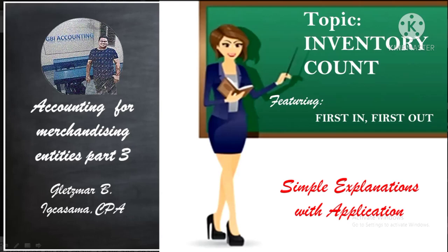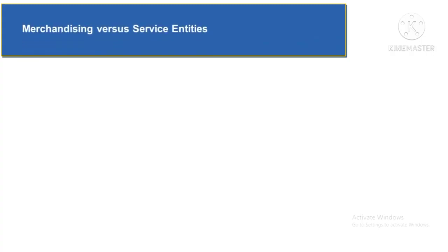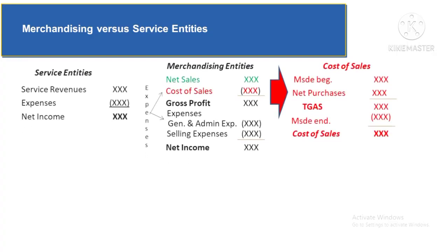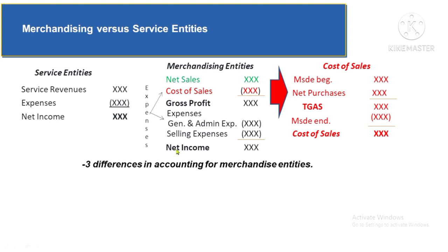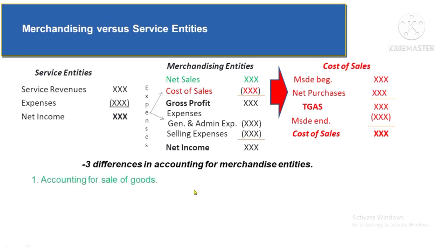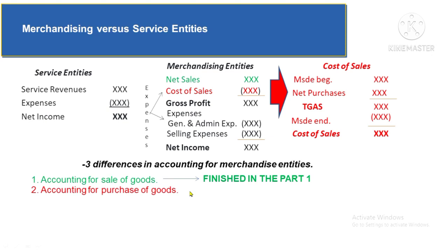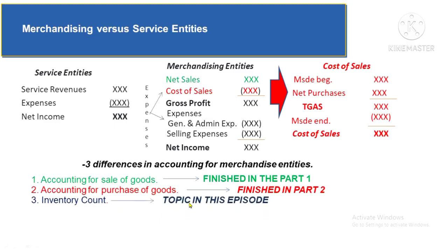Welcome to Accounting for Merchandise Entities Part 3. In the past two episodes, we compared accounting for Merchandise Entities versus Service Entities — first their income statements, then the activities present in merchandise entities but not applicable to service entities. These activities are: Number 1, accounting for Sales (Episode 1), Number 2, accounting for Purchases (Episode 2), and Number 3, Inventory Count, which is the topic of this episode.